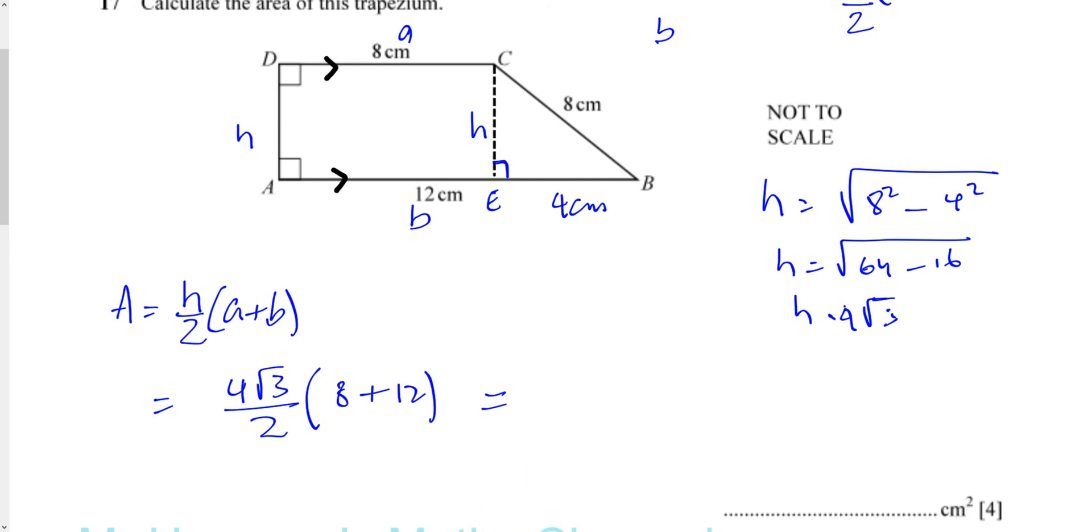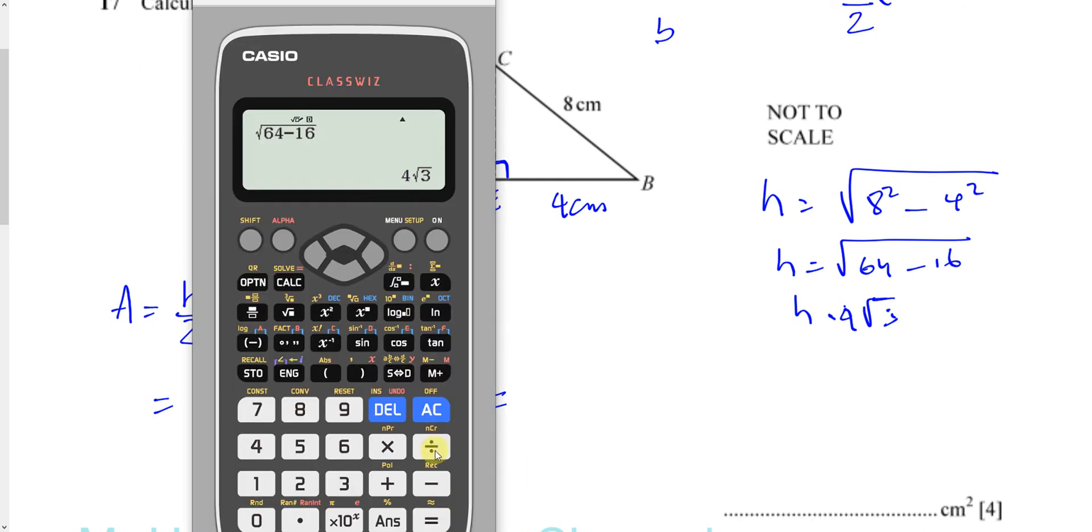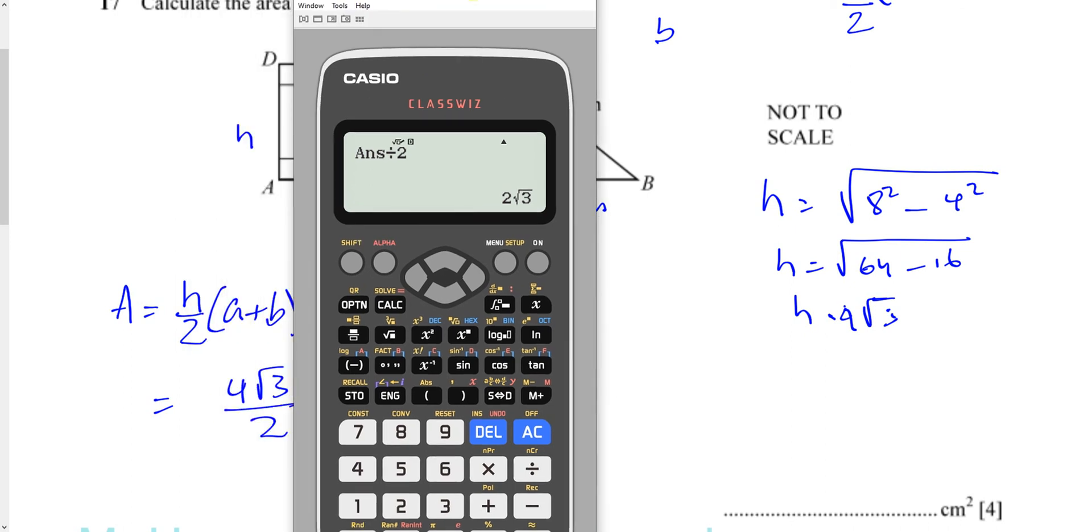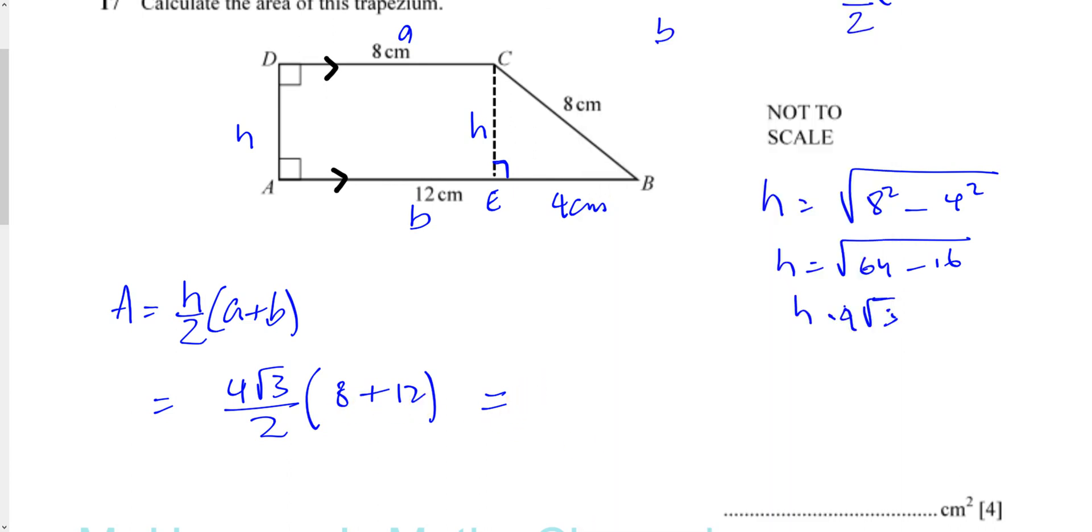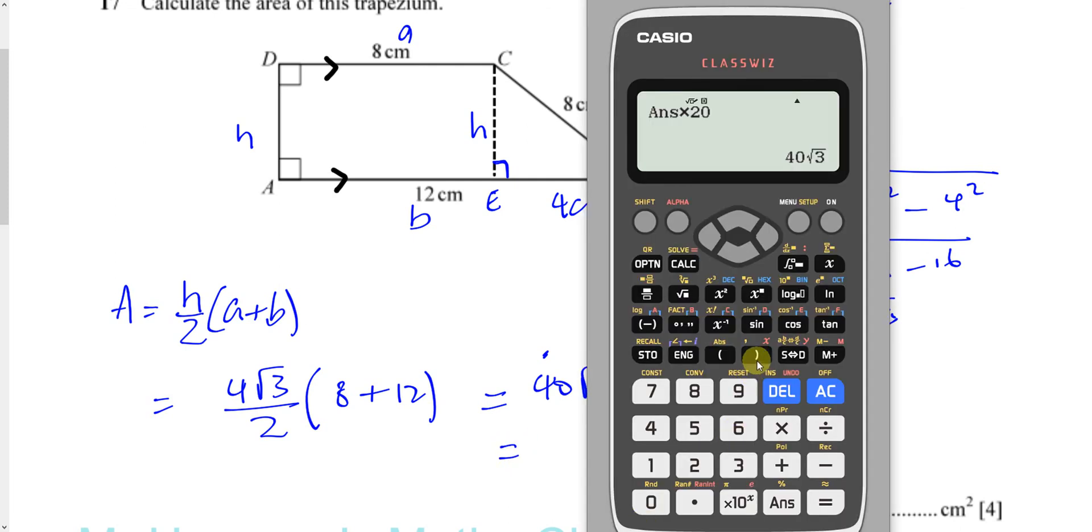We'll take that 4√3 and divide it by 2—that's 2√3—and we'll multiply that by the sum of the parallel sides, which is 20. So it's 2√3 times 20, which gives us 40√3. We end up with 40 times the square root of 3.